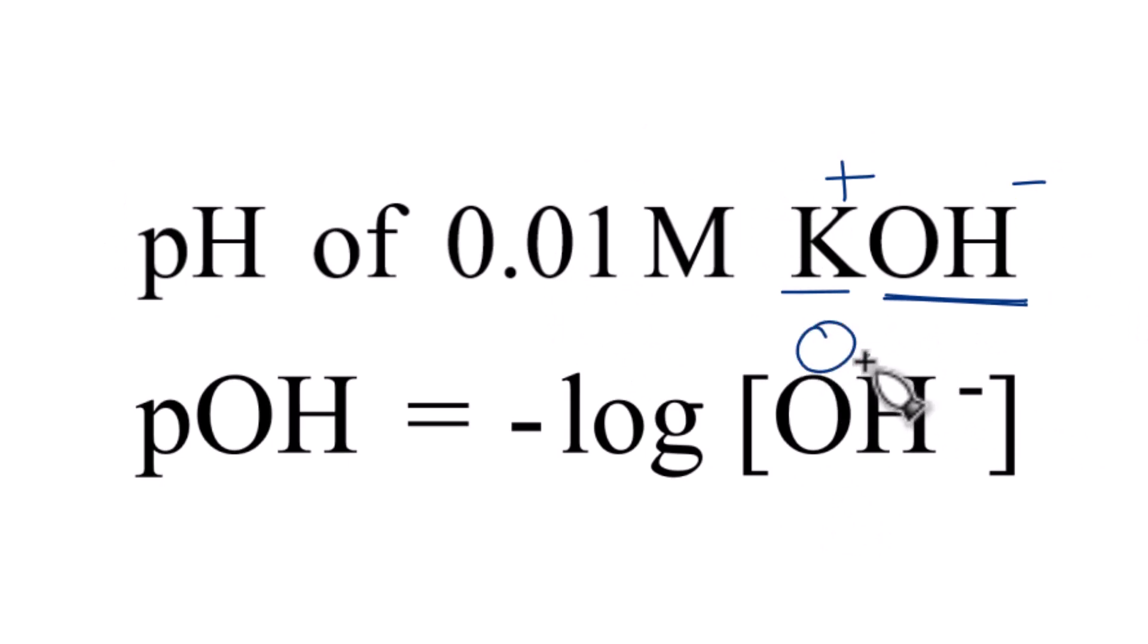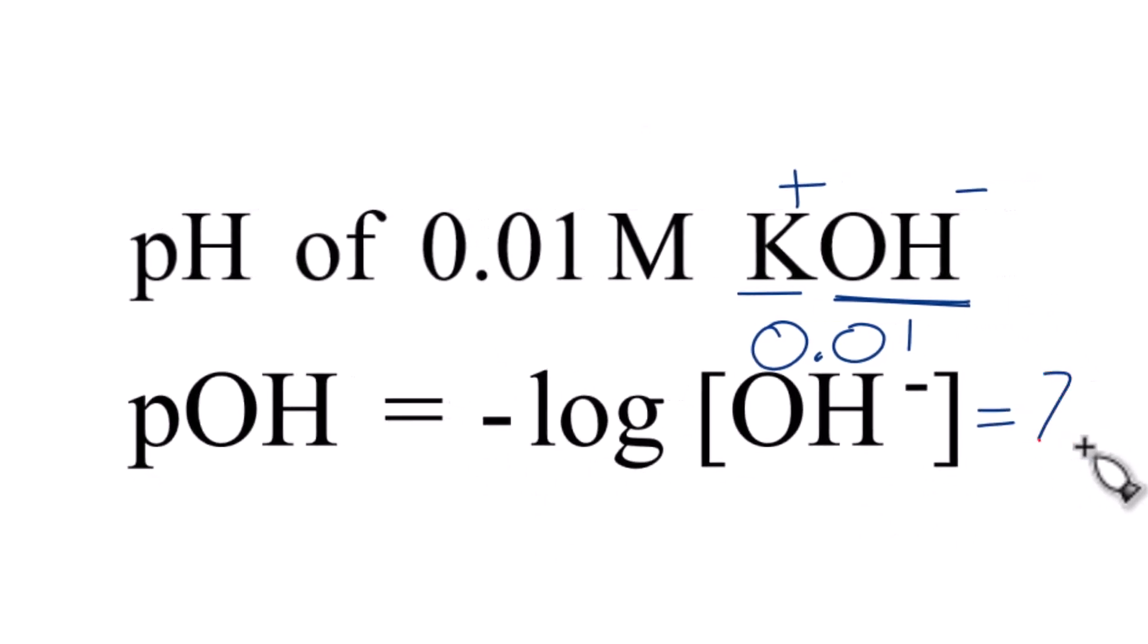So we have 0.01. We take the negative log of that. The log would be negative 2, then we have this negative, that would cancel the negatives, and we just get a pOH of 2.